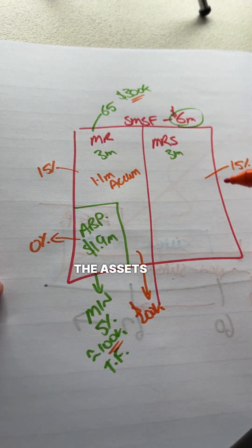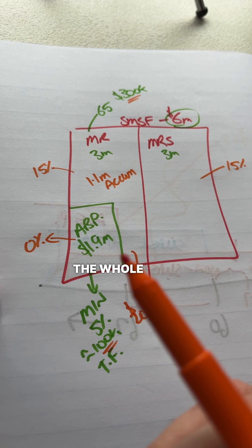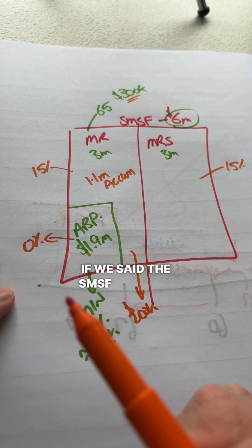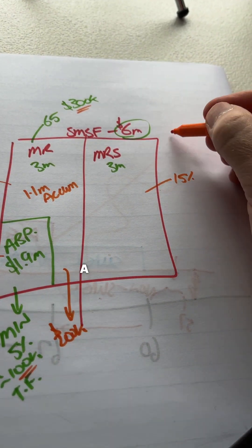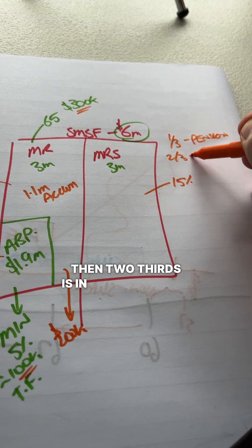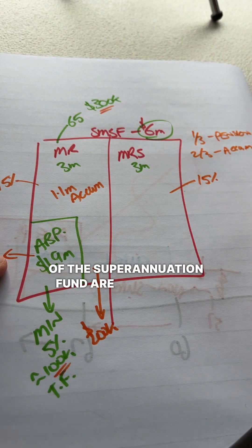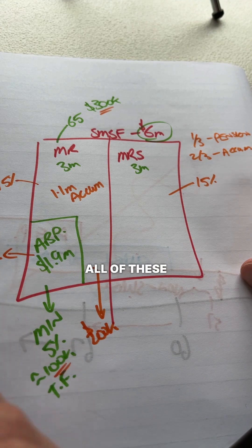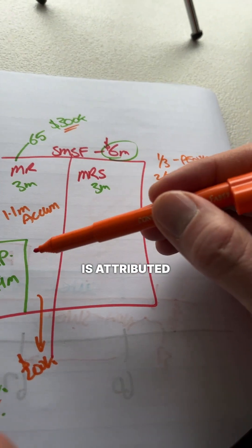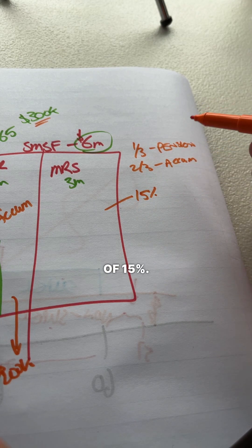Now, these assets, you can't segregate the assets into these different accounts. What happens is one summary of the earnings of the whole SMSF are calculated, and then the earnings are proportioned amongst the different accounts. So if we said the SMSF is worth about $6 million, there's roughly a third of the fund, being $1.9 million, is in pension. Then two-thirds is in accumulation. So then, once the earnings of the superannuation fund are determined, so it's income that's earned, realised capital gains, all of these kind of things, it's then proportioned. Roughly a third of those earnings is attributed to the pension fund, so they're tax-free.